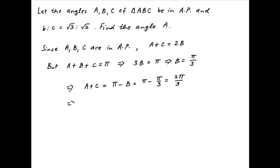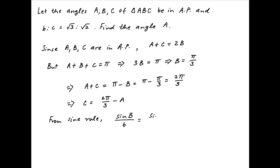This implies that C is equal to 2pi upon 3 minus A. Now, from the sine rule in triangle ABC, we have the result: sine of angle B divided by side b is equal to sine of angle C divided by side c.